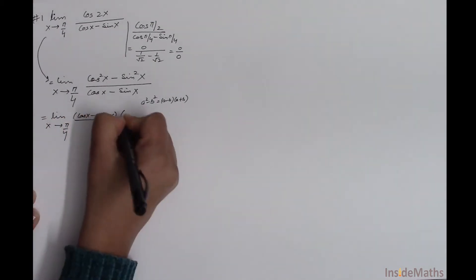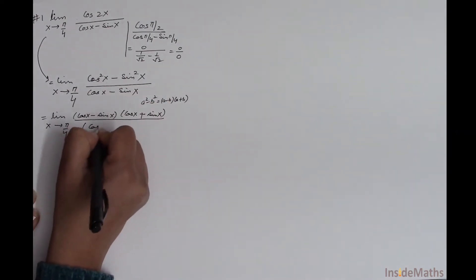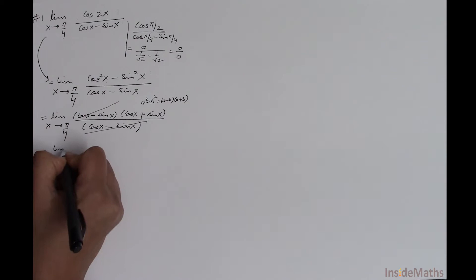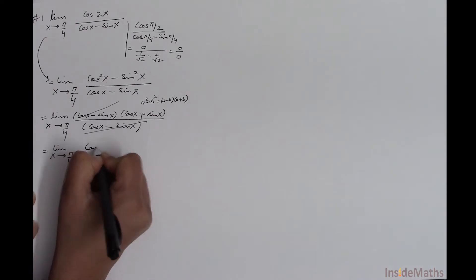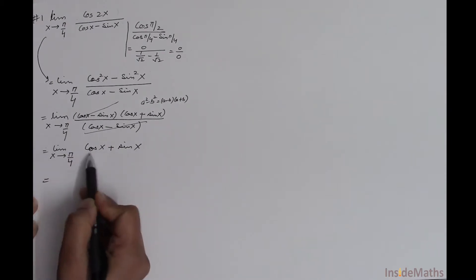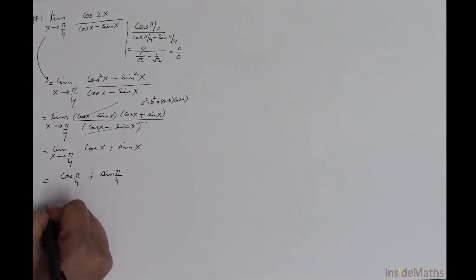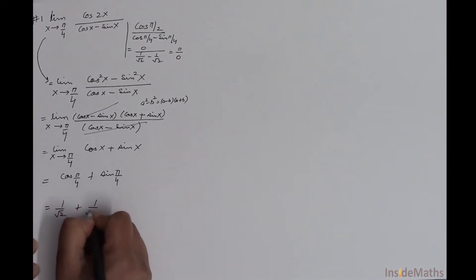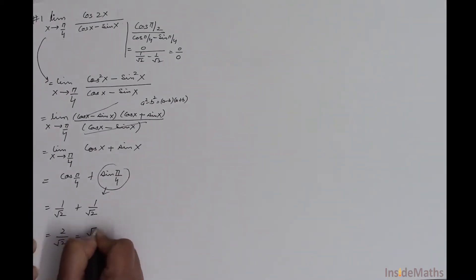After cancelling the common factor (cos x - sin x), we get the limit as x approaches π/4 of (cos x + sin x). Substituting π/4 gives cos(π/4) + sin(π/4) = 1/√2 + 1/√2 = 2/√2, which equals √2.